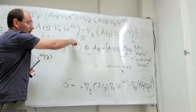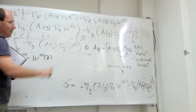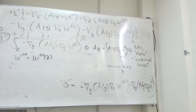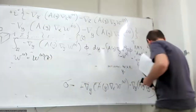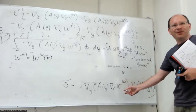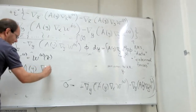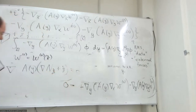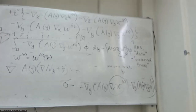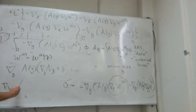Since w_0 depends only on x̃, its y-gradient is zero and we can throw away that term. The fact that the next term at order ε^{-1} must also equal zero — because the right-hand side is of order ε^0 — gives me an equation for w_1. This is exactly the cell problem equation for the corrector function that I introduced yesterday.